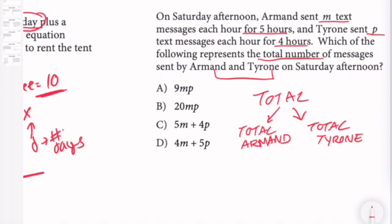Well, Armand sent M text messages each hour for five hours. So for five hours times M, because that's the number of text messages he sent each hour.